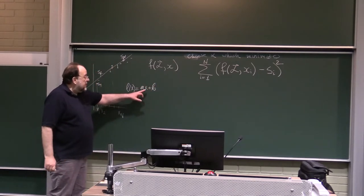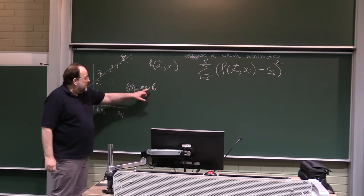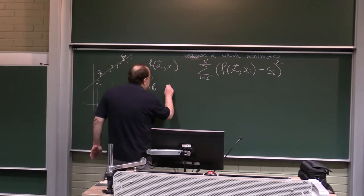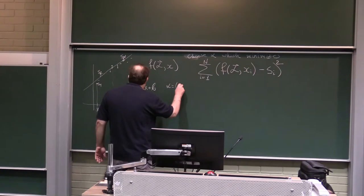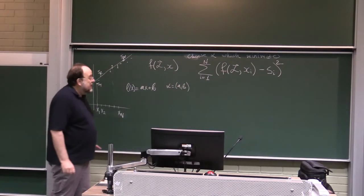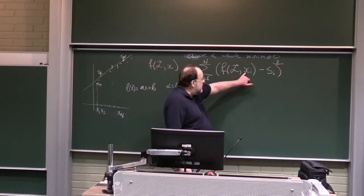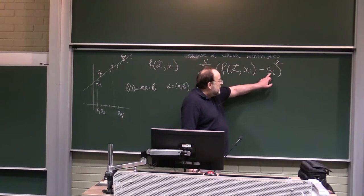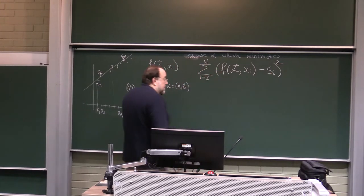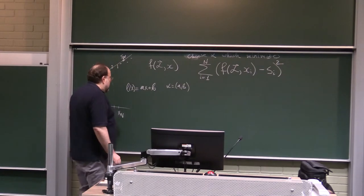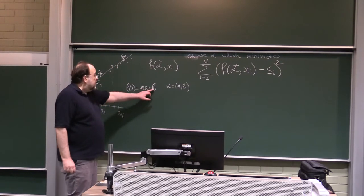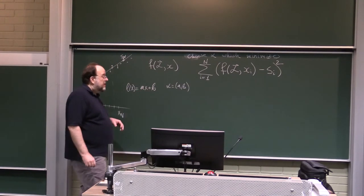A line L of x is of the form ax plus b. So in this case you would have only two unknowns. So this factor alpha, in this case, would be just a, b. You would have only two variables, so these are numbers. These are the x coordinates, and these are the sample values at these coordinates.